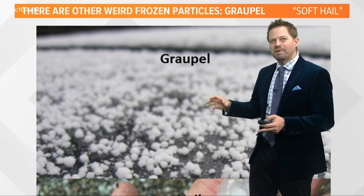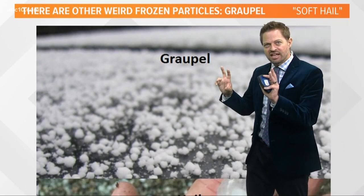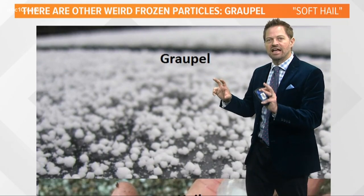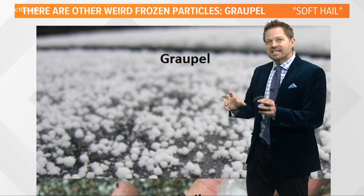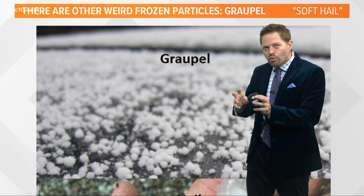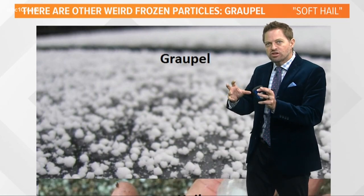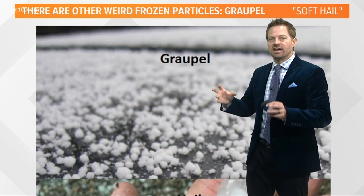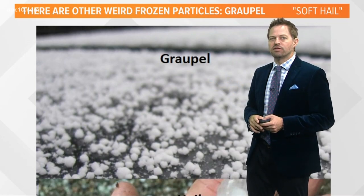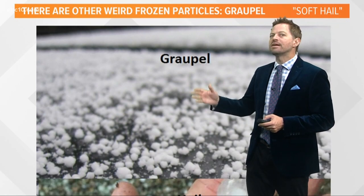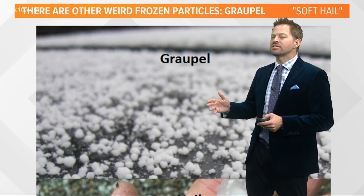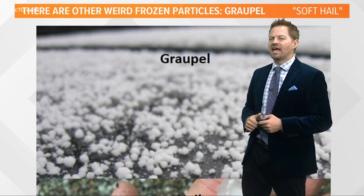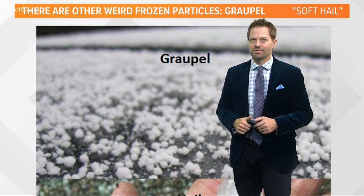We call this graupel. It's basically what they nicknamed soft hail — it's a water droplet that starts to grow ice on it as it gets bigger. So there are some other things that are kind of in between hail and snow.